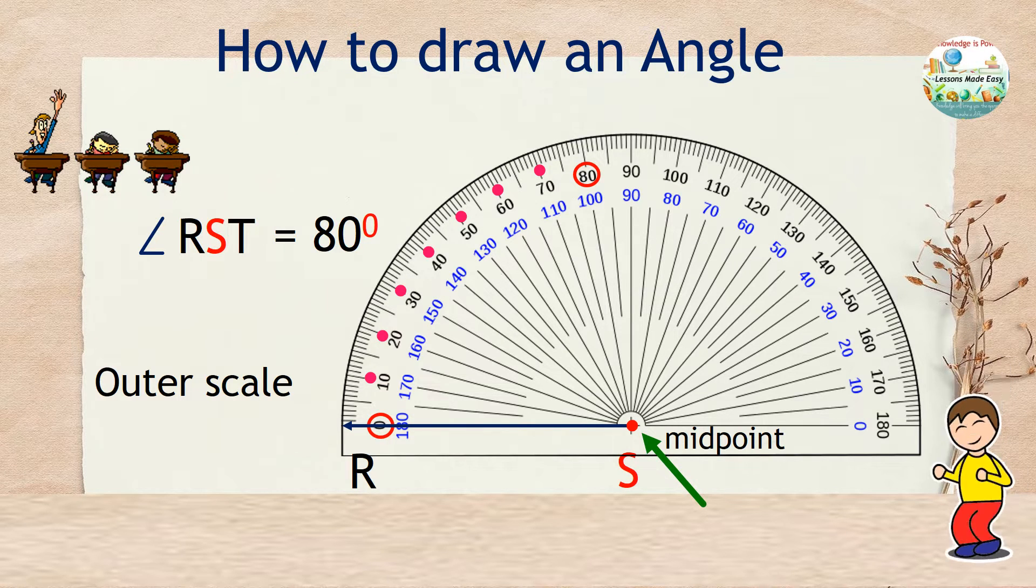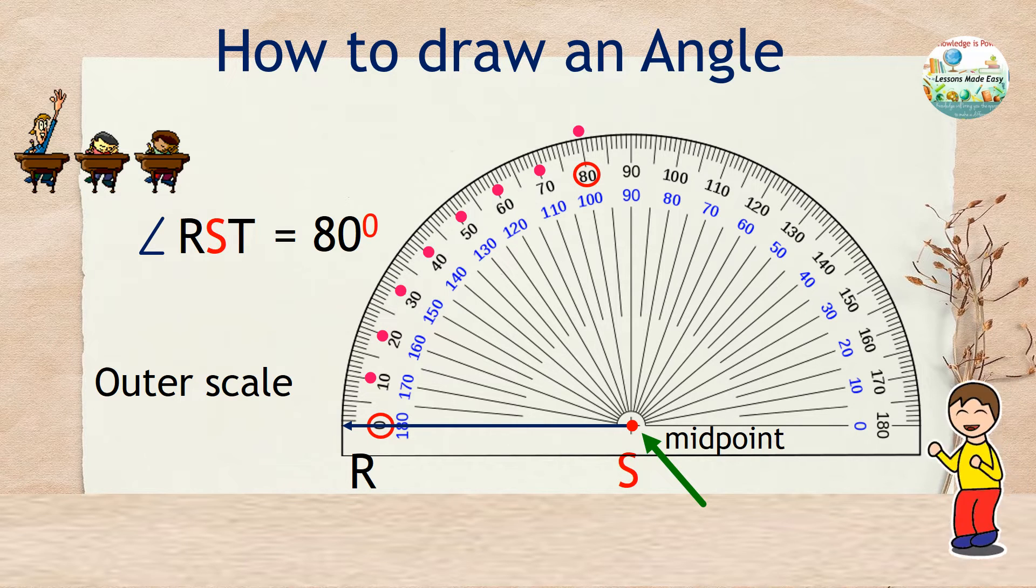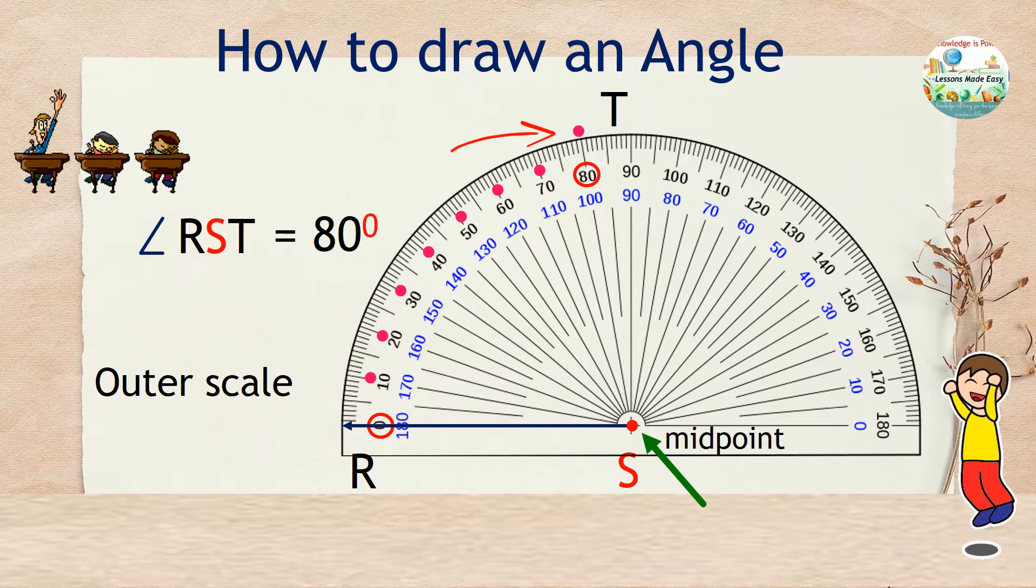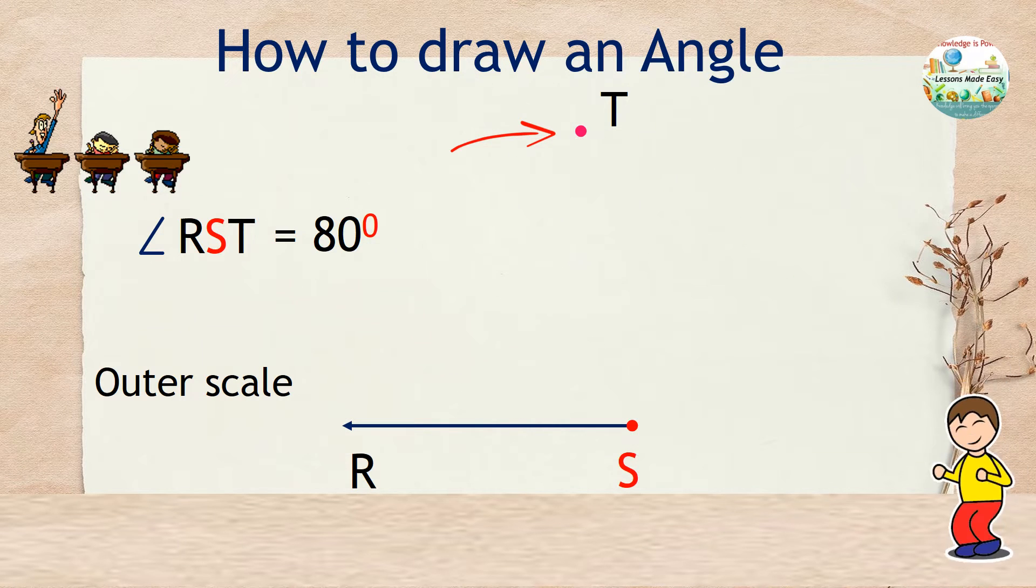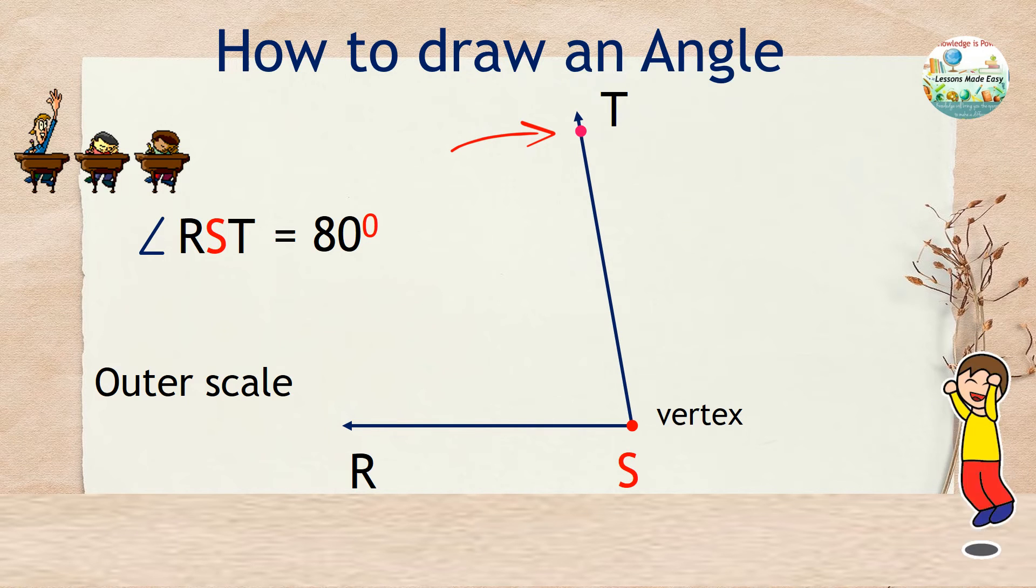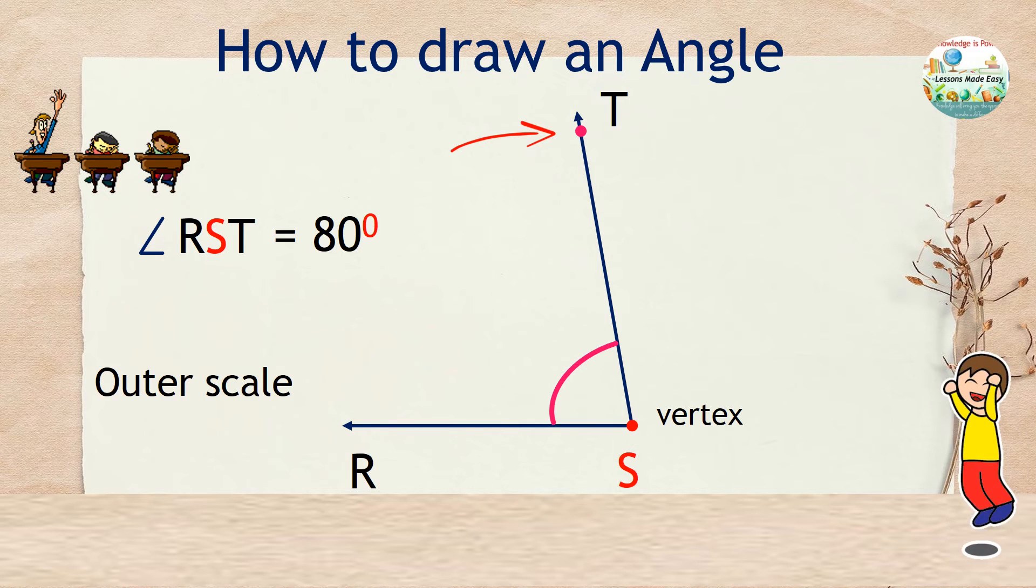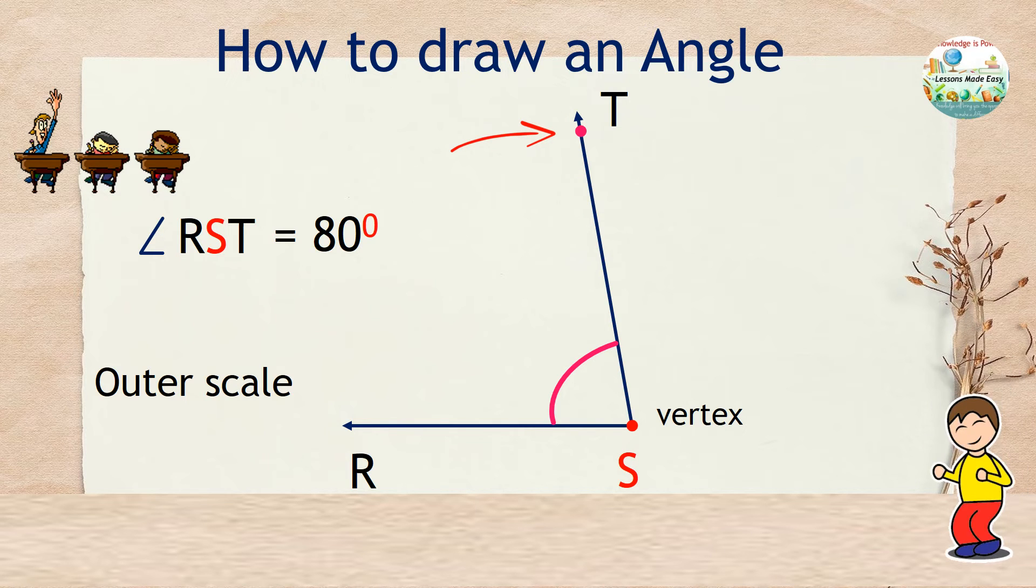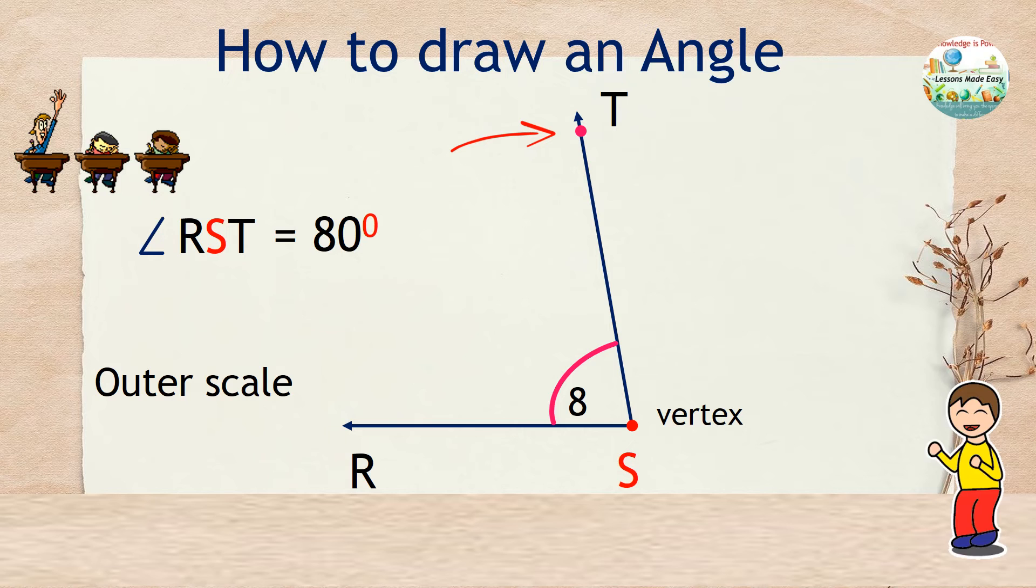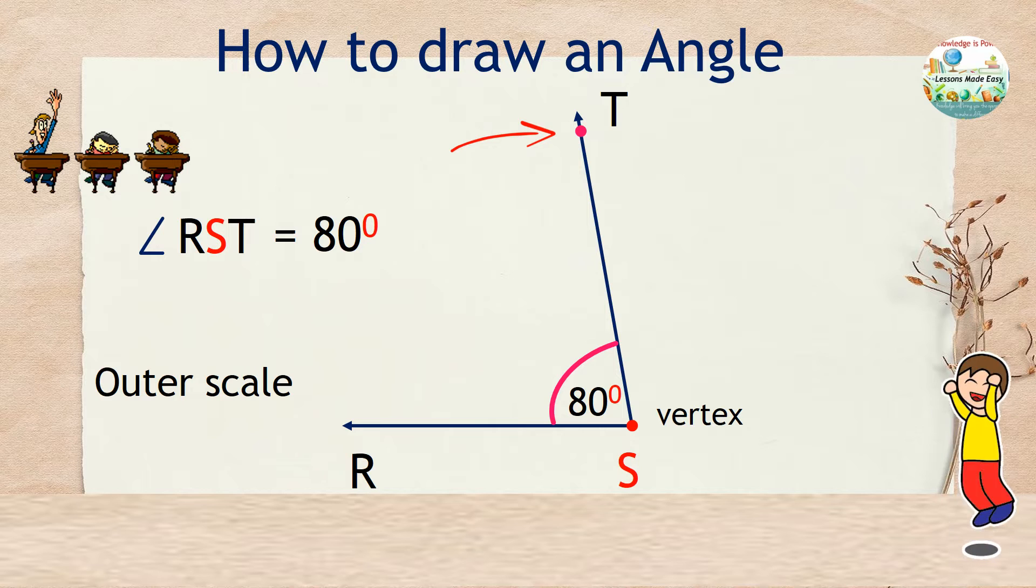All we need to do is to mark a point that corresponds to 80 degrees and we'll name this point T. This time we can remove the protractor. Then draw a ray by connecting the vertex and point T. The corner formed is our angle and just indicate the size of the angle that is 80 degrees and we're done. So this is how an angle of 80 degrees would look like.